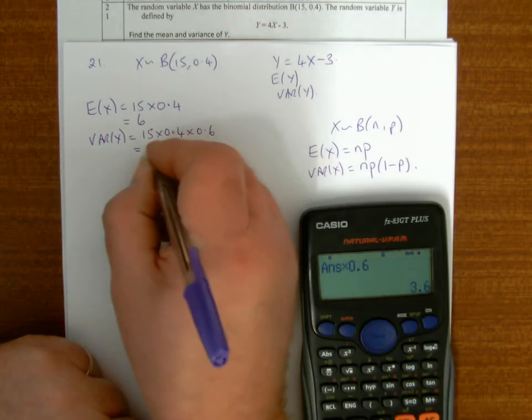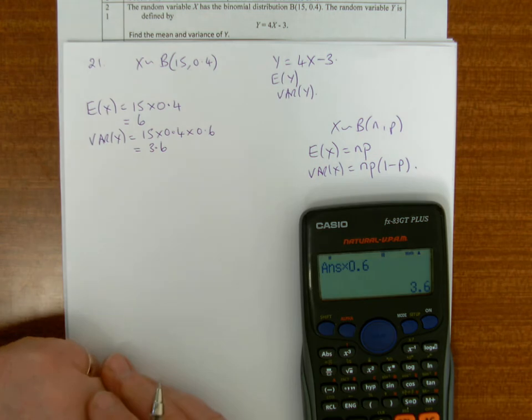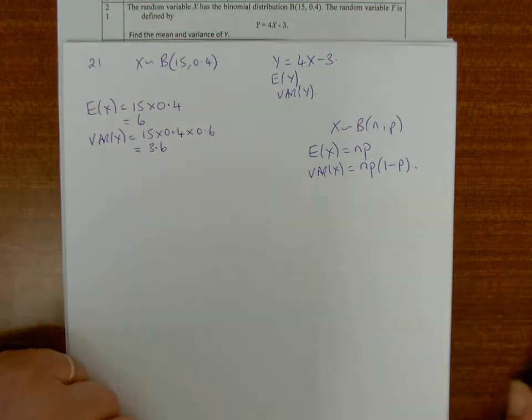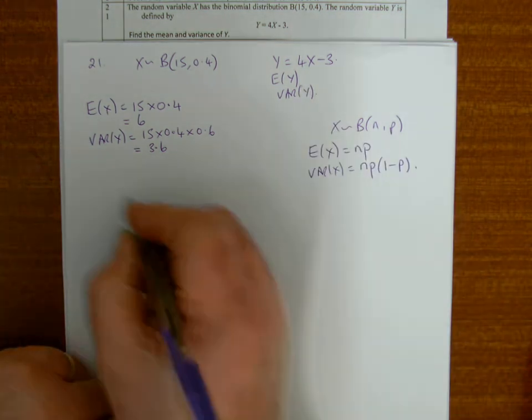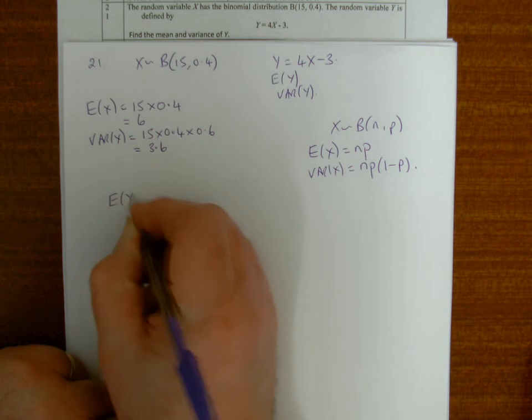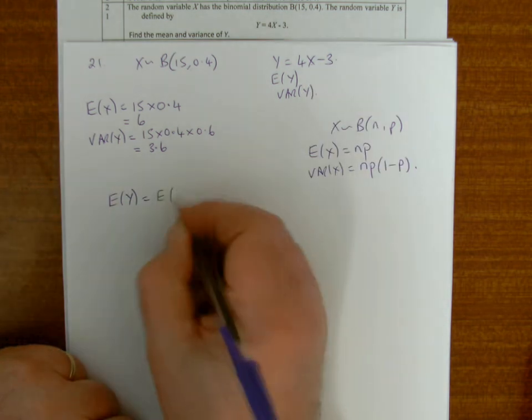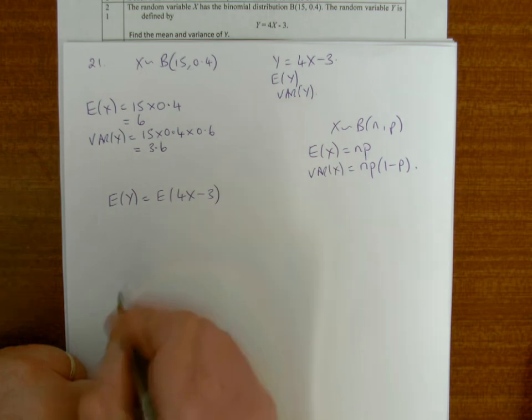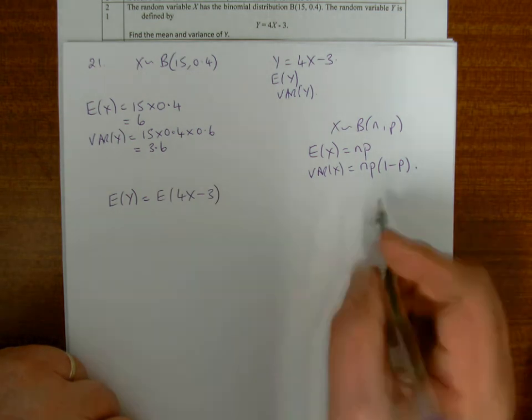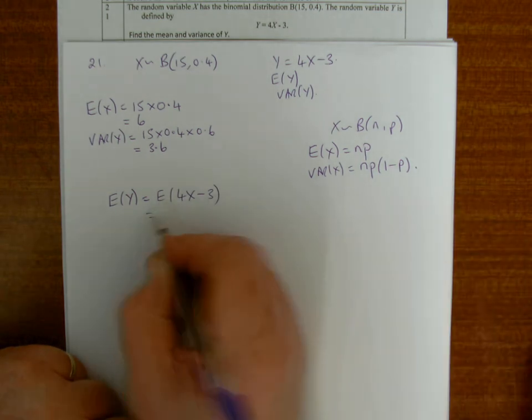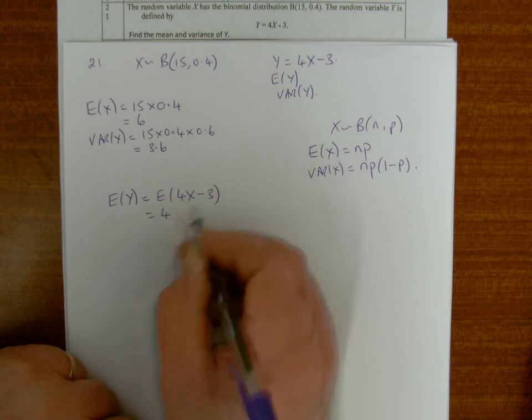So that's E(X) and Var(X). And so to find E(Y), E(Y) is E(4X - 3), and then you're opening this up, this would be 4 lots of E(X) take away 3.